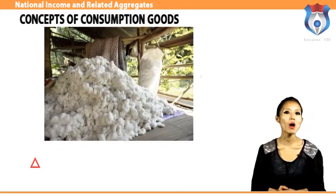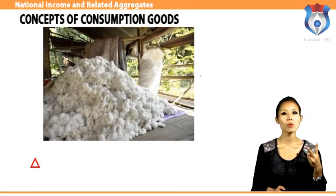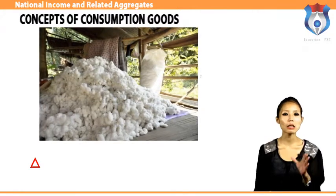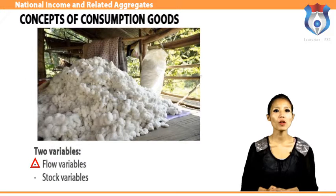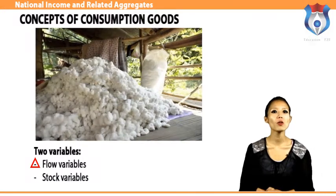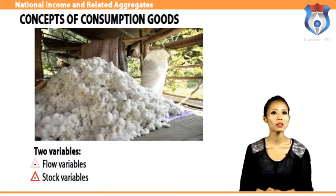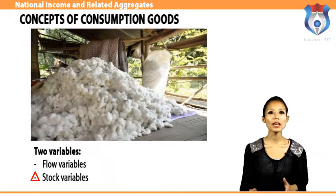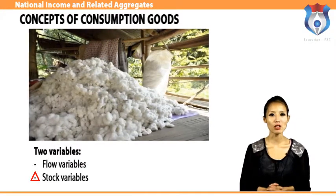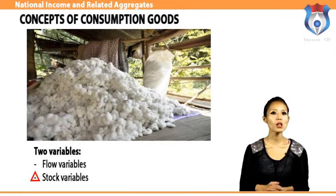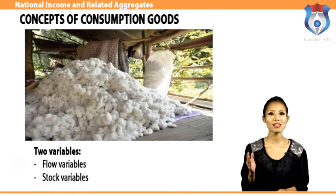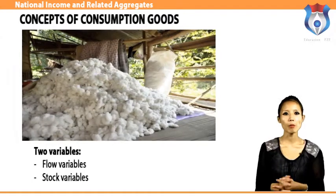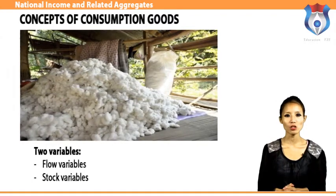Before moving ahead, you must know about two important variables that help us in measuring national income. A flow variable is a variable measured over a period of time — this period could be daily, weekly, or monthly. National income is an example. Stock variables are those measured at a particular point in time. An example of a stock variable is a company's balance sheet.